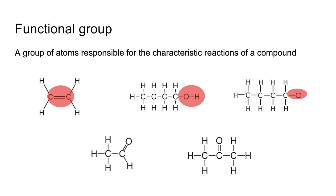On the bottom line, we've got a C double bond O and an H on the C as well — that's an aldehyde. And a C double bond O but with carbons either side — that's a ketone.